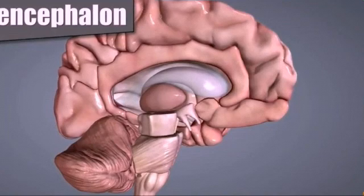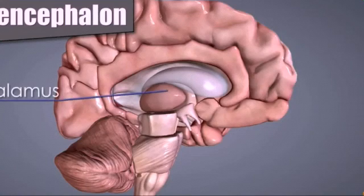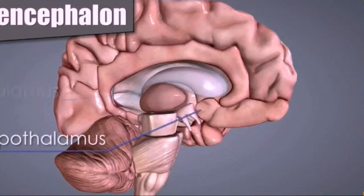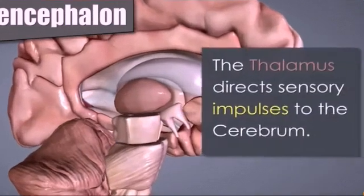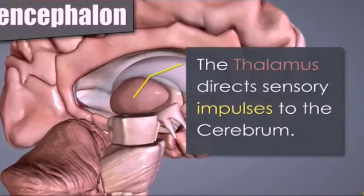Diencephalon is the third part and is made up of two parts, namely the thalamus and hypothalamus. The thalamus acts as the relay center and directs the sensory impulses to the cerebrum.